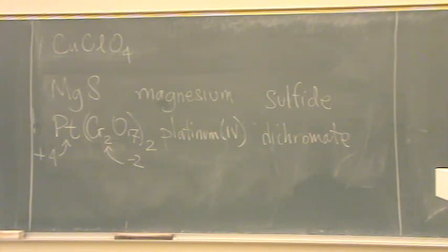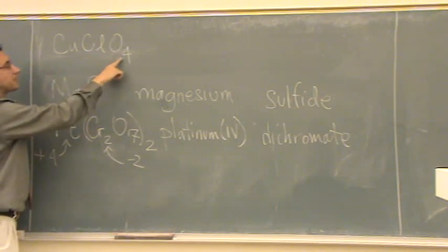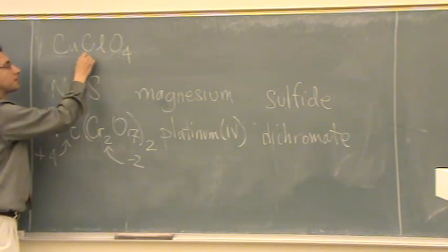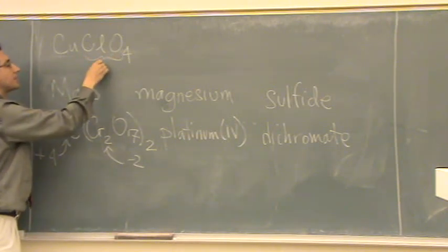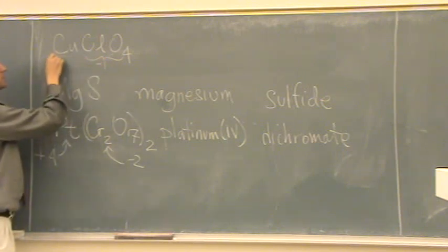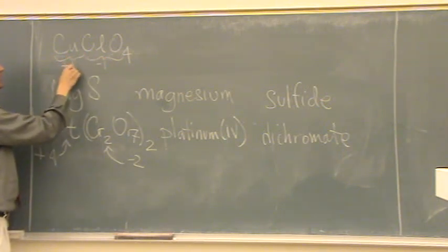Okay, CuClO4. So, what's the charge on the ClO4? Yeah, it's 1 minus or minus 1. So that means copper has got to be plus 1.